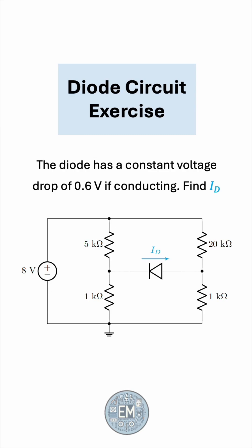If the diode has a constant voltage drop of 0.6 volts if conducting, or forward biased, find ID, the current labeled through the diode.